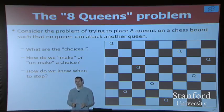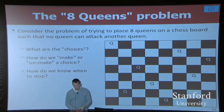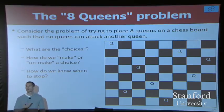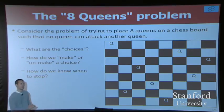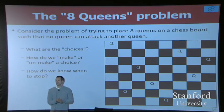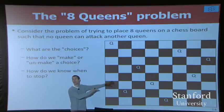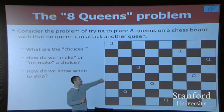So for any of these problems, it's all about what we call choose, explore, unchoose. So what are we choosing and exploring and unchoosing in this problem? For any new problem, we have to try to figure out what the choices are that our algorithm is going to try out. What do you think the choices are for this problem?